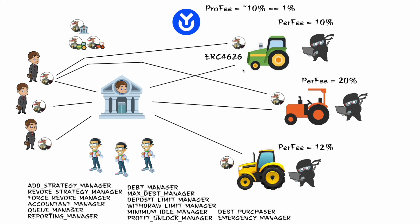The Profit Unlock Manager — as I understand it — deals with the following scenario: users deposit 100 Caesar tokens each, those tokens are sent out generating profit, but the profit hasn't been reported yet and the price per share hasn't gone up. If a new person deposits now, should they get a share of already-accumulated profit? Probably not. But this manager can set the unlock to zero, meaning new depositors immediately get a share of profits yet to be reported.